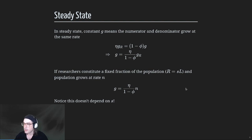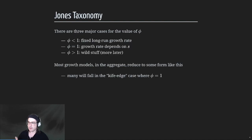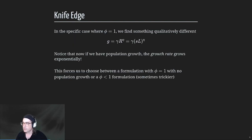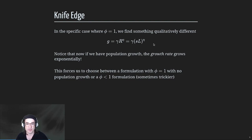That gives you this result that G is equal to some constant growth rate when researchers grow with population. It's a constant growth rate that's not a function of the fraction of researchers S that you're using, which was surprising to people. That's only for phi less than one. When phi equals one, that's the knife-edge case - you get a growth rate that actually is a function of S, but any population growth would induce accelerating growth, which is problematic.